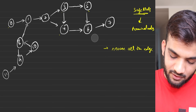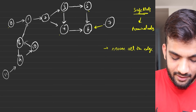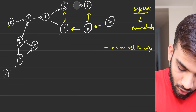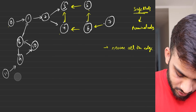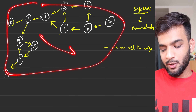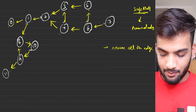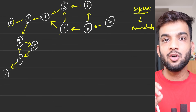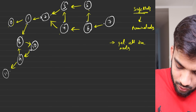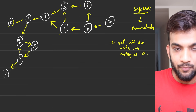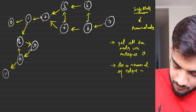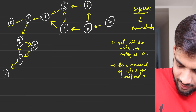After reversing all edges, the graph looks different — edges that previously pointed forward now point in the opposite direction. With the reversed graph in hand, we follow plain topological sort: get all nodes with in-degree zero, then do removal of edges on adjacent nodes. That's exactly what Kahn's algorithm states.